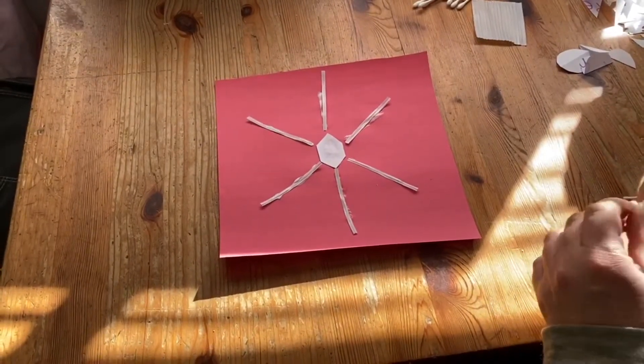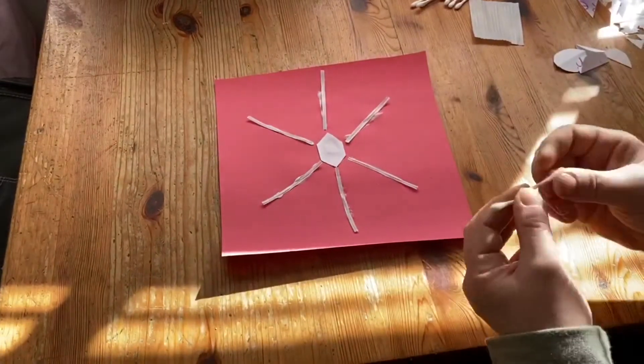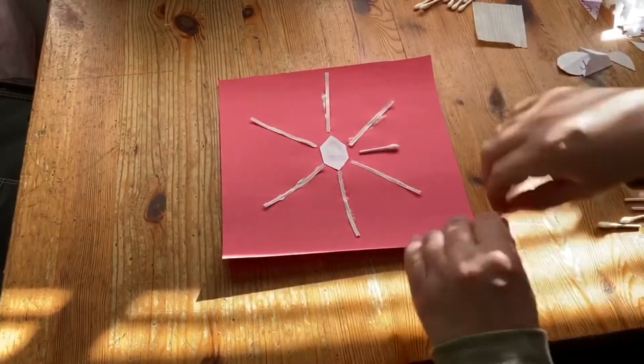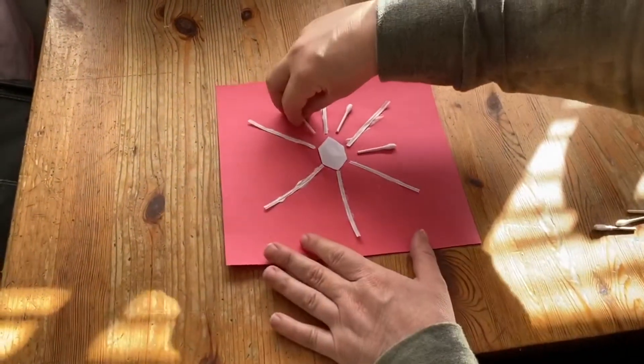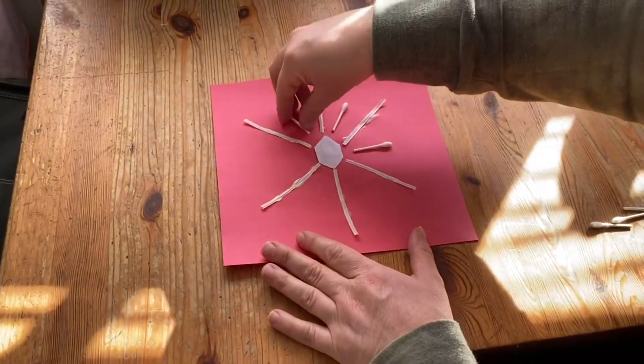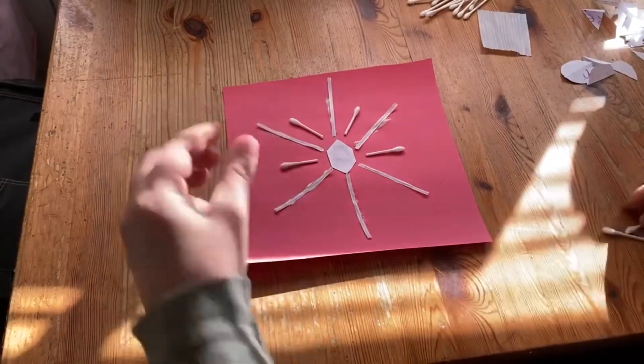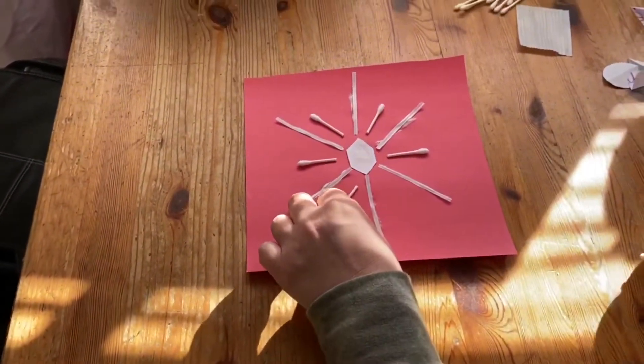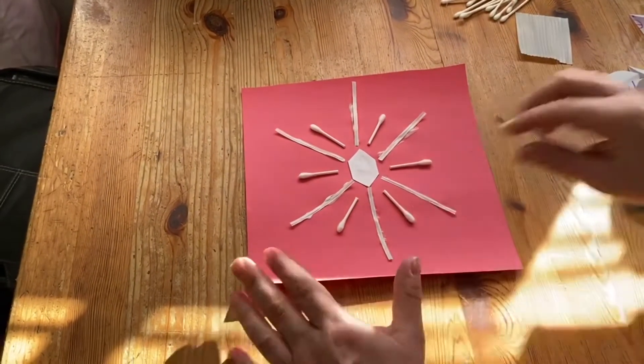And now what I'm going to do is I want to fill these little parts in with something. So I think I'm going to use my q-tips that I've cut to make this a little more interesting. So I'm going to lay these out and check out how they look, and then I'm going to glue.